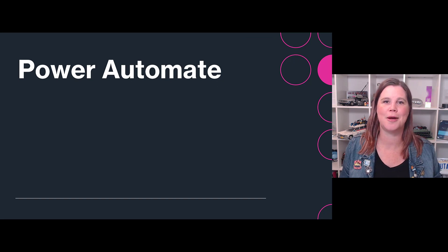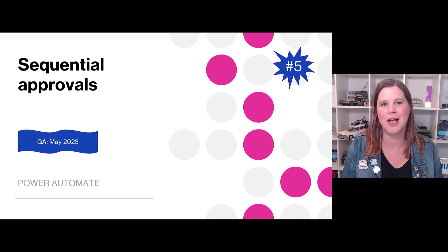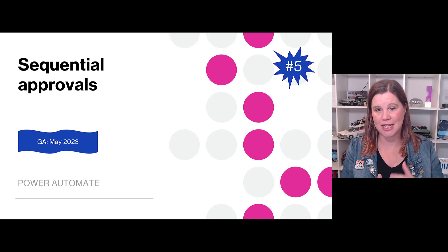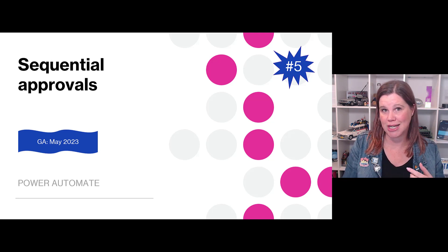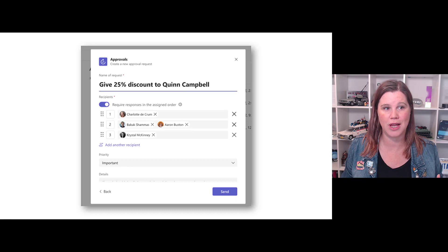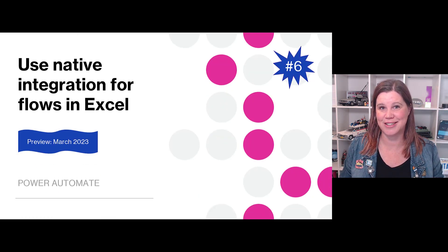Moving into Power Automate, a couple of really cool things. First up is sequential approvals — approvals are something I love using, triggering them out of model-driven apps all the time, so an enhancement here is going to be amazing. This will allow you to define multiple levels or stages in an approval and assign who next needs to approve something. It moves on to the next stage, and if it's rejected at any level it's considered rejected. You'll also be able to see the history of what's going on, with the approvals app sitting in Teams and Power Automate behind the scenes.